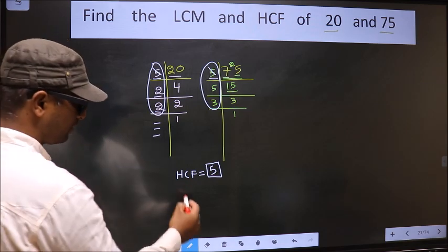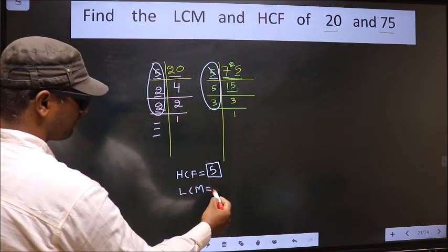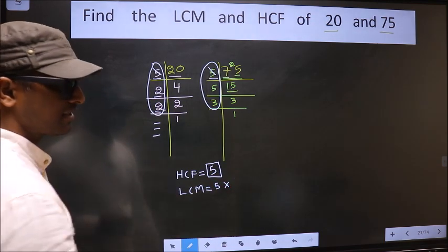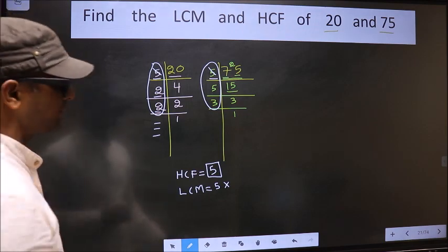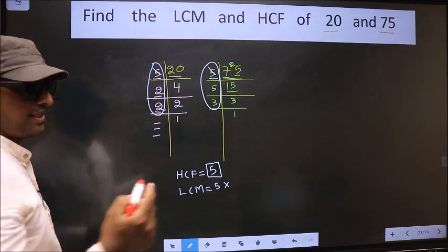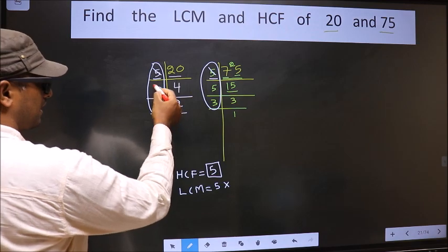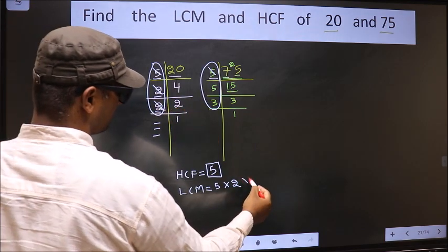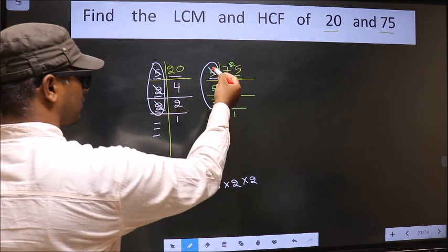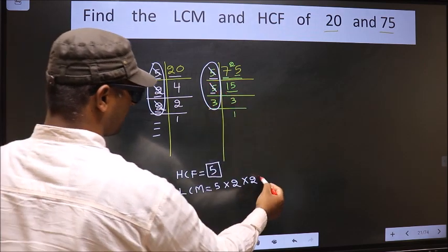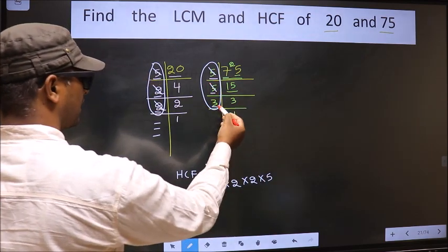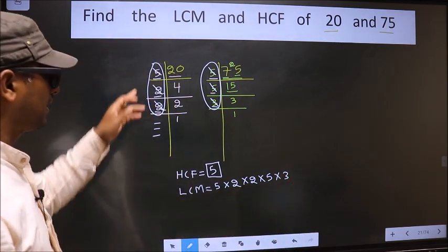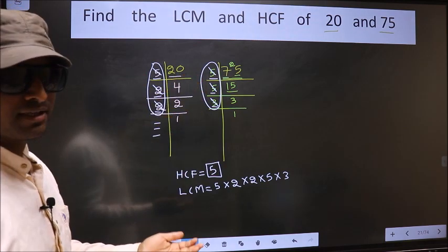Next, to get LCM: take the HCF we got and multiply by the numbers we did not mark. Here we did not mark 2, so mark 2 and write here. We did not mark this 2, so mark it and write here. We did not mark 5 and 3 from the other factorization, so mark them and write here. Now each number has been marked.